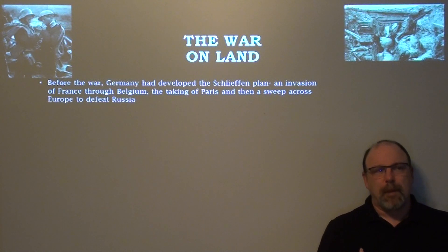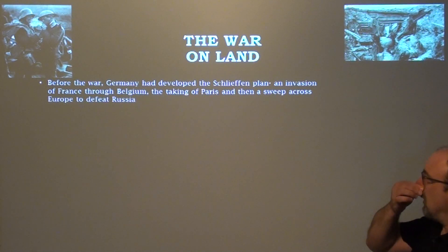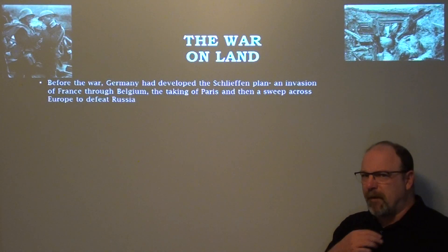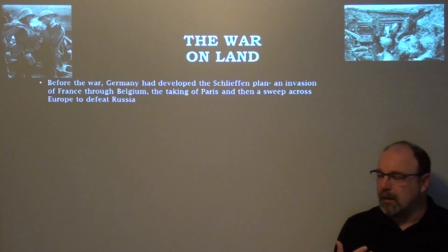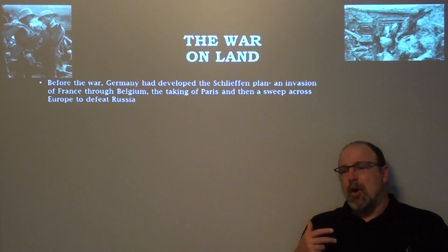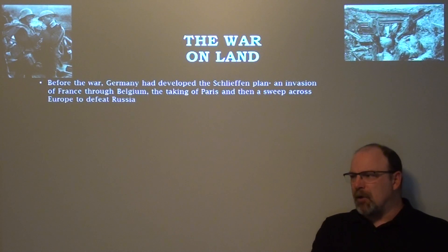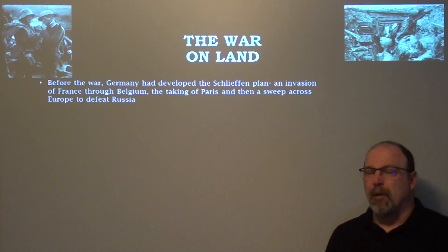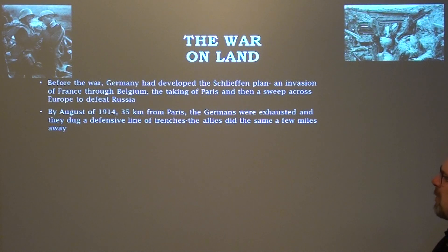In a general sense, when we look at the planning of war, the Germans were already thinking about strategy in 1905 when they developed the Schlieffen Plan — an invasion of France through Belgium, the taking of Paris, then a sweep across Europe to defeat Russia. What makes the Schlieffen Plan significant is that ten years before the war started, German military personnel were already planning how to win it. By August 1914, the Germans had advanced 35 kilometers toward Paris before exhaustion forced them to dig a defensive line of trenches.